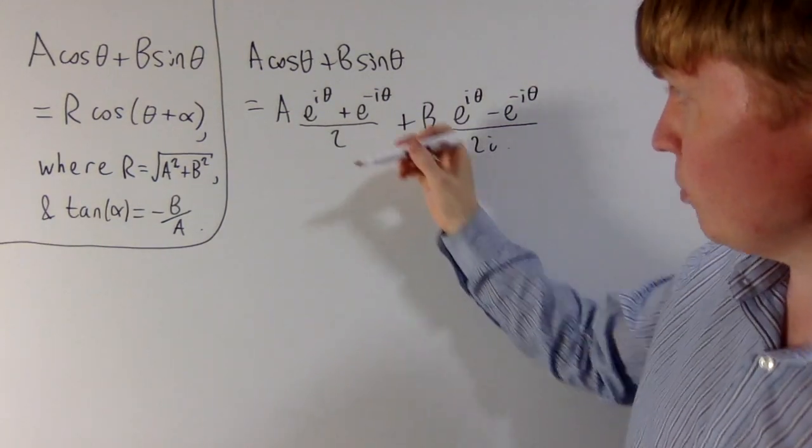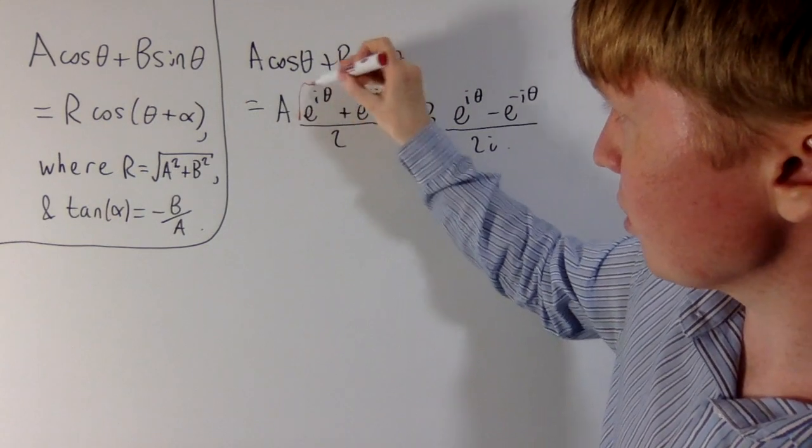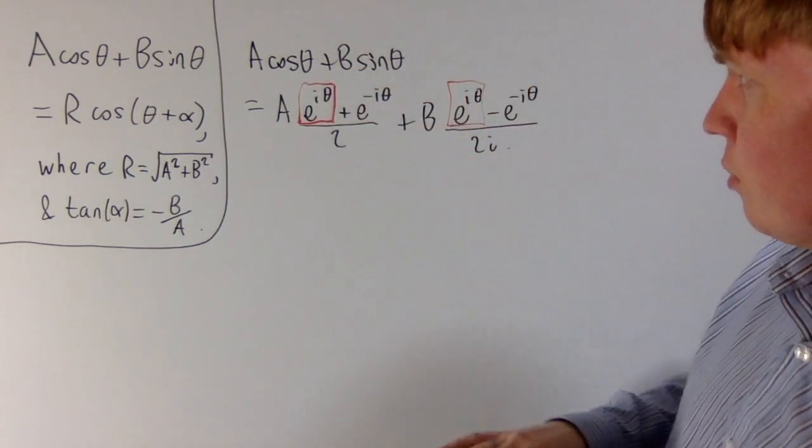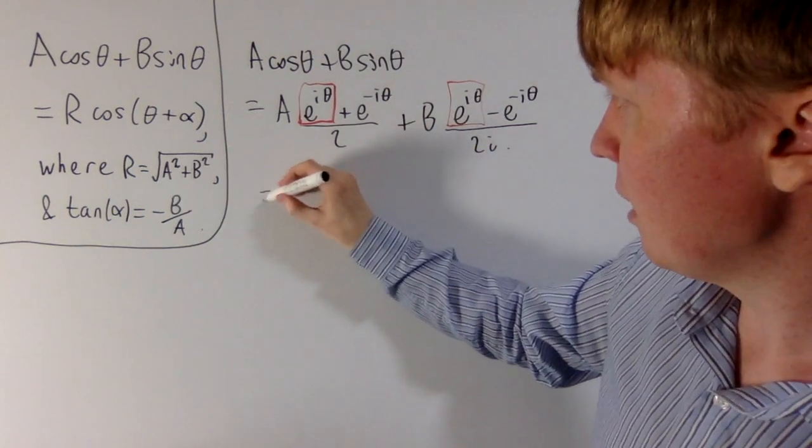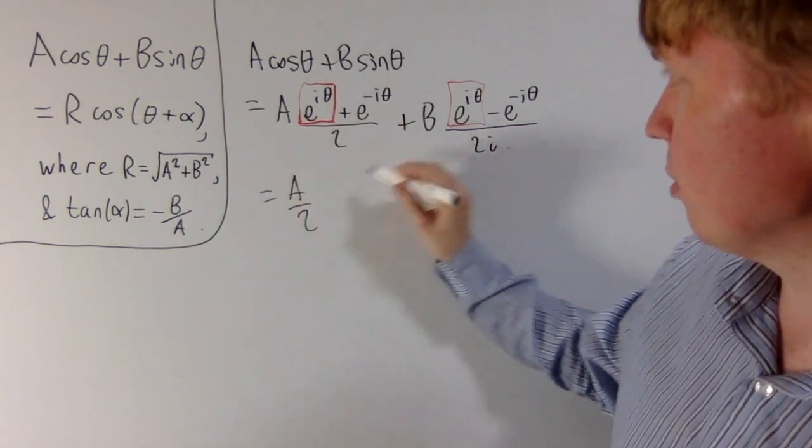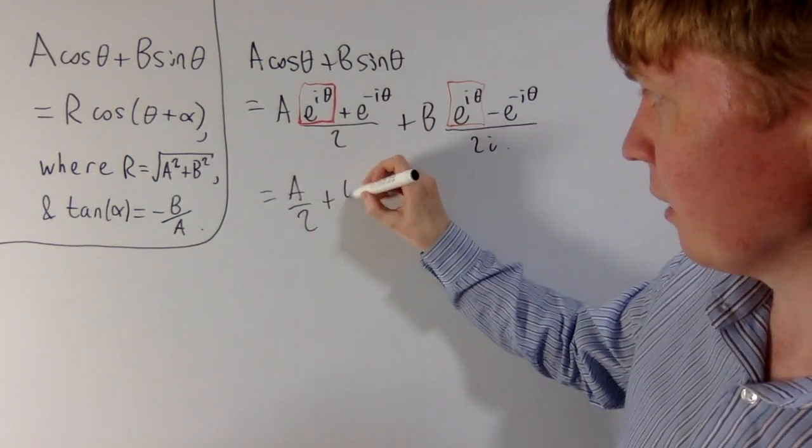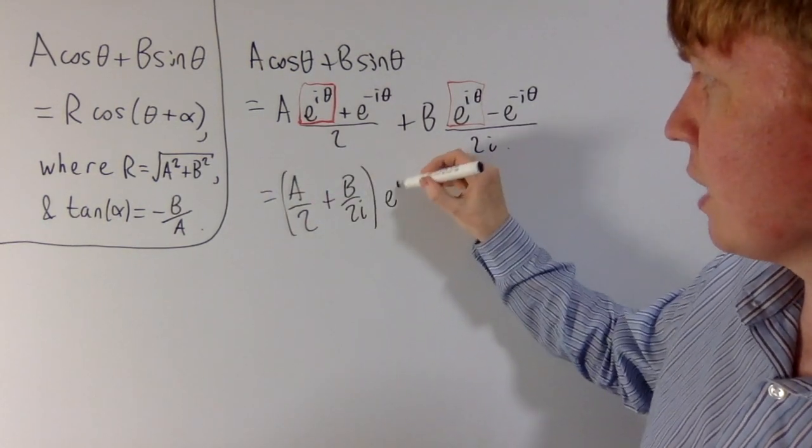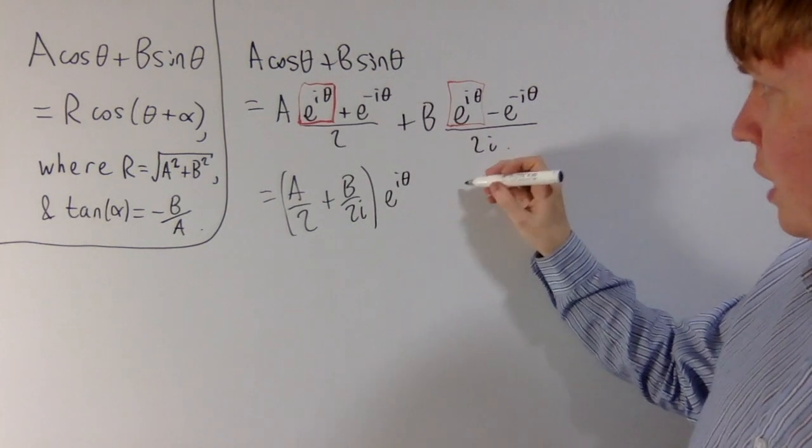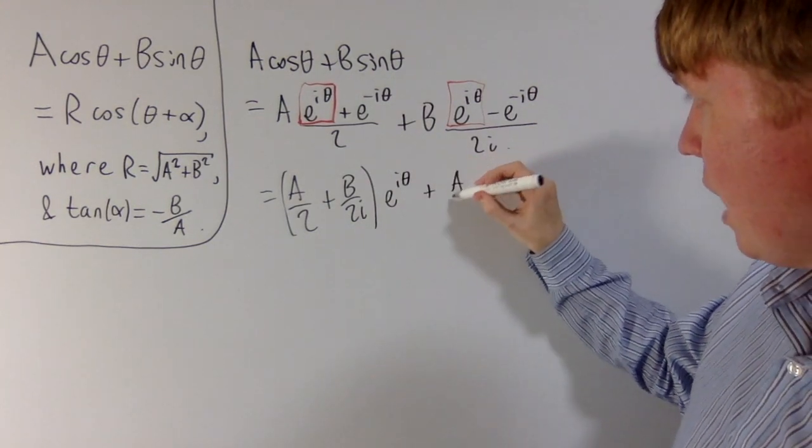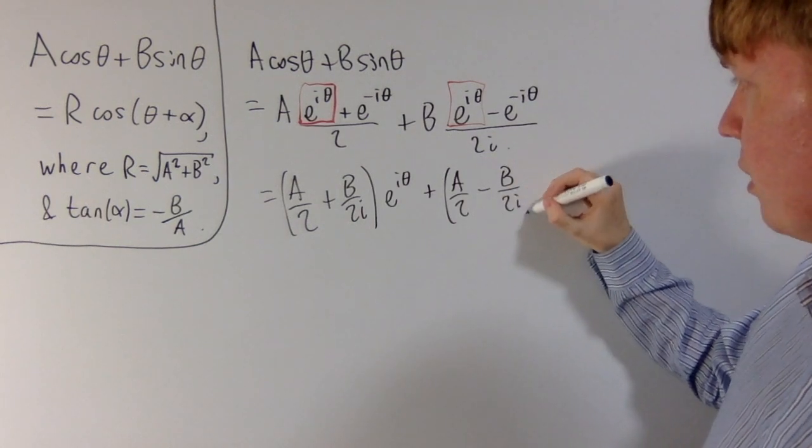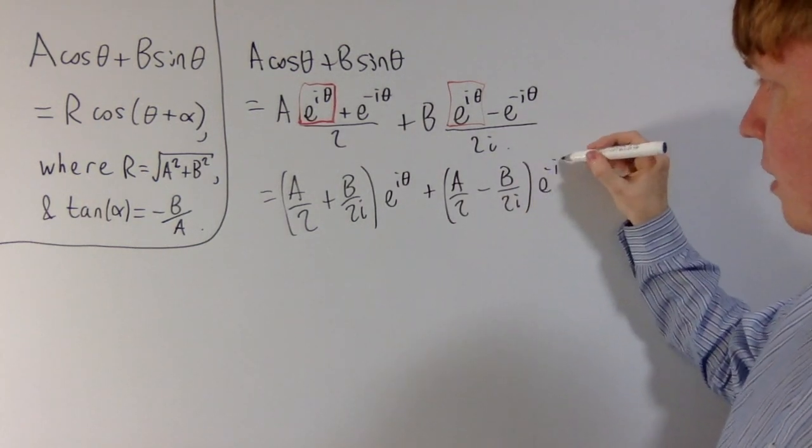What we'll do next is group together our e to the i theta terms and our e to the minus i theta terms. The coefficient of e to the i theta we get an A over 2, and we've also got plus B over 2i as our new coefficient when we group together our e to the i theta terms. Then for our e to the minus i theta, we get plus A over 2 again, but now it's minus B over 2i, and multiplied by e to the minus i theta.